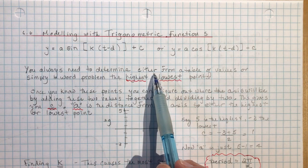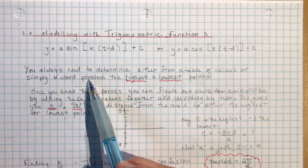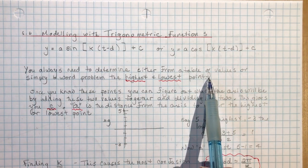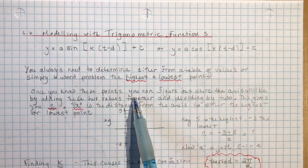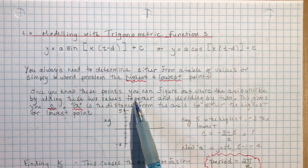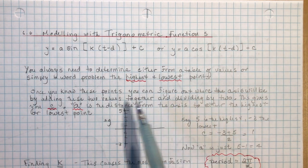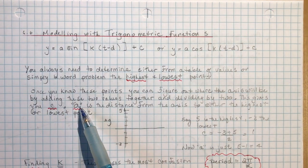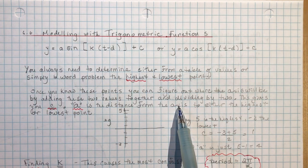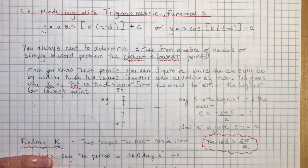You always need to determine, either from a table of values or a word problem, the highest and lowest points — that's the first thing you want to do. Once you know these points, you can figure out where the axis will be by adding these two values together and dividing by 2. This gives you C. A, or the amplitude, is the distance from the axis to either the highest or the lowest point.